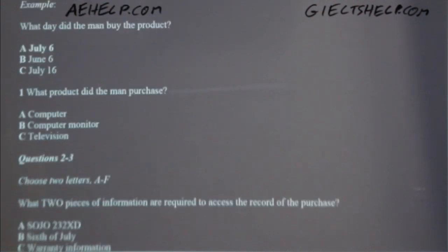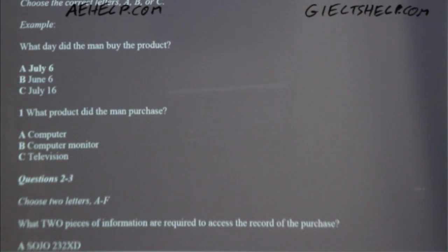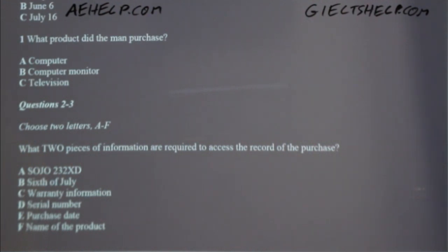Now we shall begin. You should answer the questions as you listen, because you will not hear the recording a second time. Listen carefully and answer questions one to five. Good afternoon. I bought a product from your store one week ago and I've been having difficulties getting it to work properly. Of course, sir. Do you have the original receipt? The first piece of information I need is the date you purchased the product. Yes, I have it right here — I purchased it eight days ago on the 6th of July. The 6th of July. I also need the name of the product as indicated on the receipt. The receipt shows it as S-O-J-O-2-3-2-X-D. I see the product in my records now.